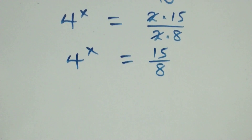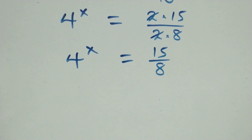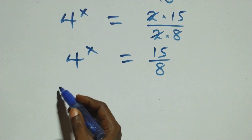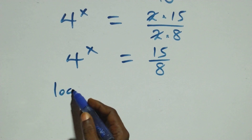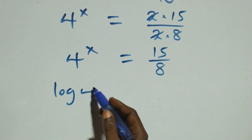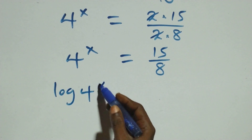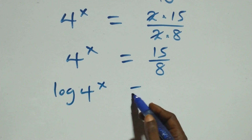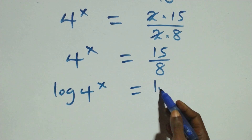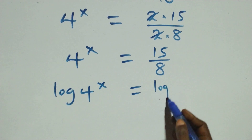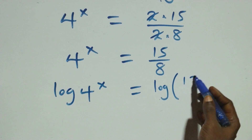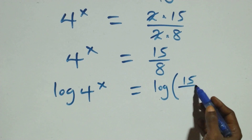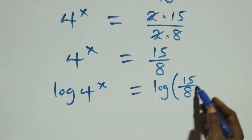The next step: we take the log on both sides. We have log of four raised to power x equals log of fifteen over eight.